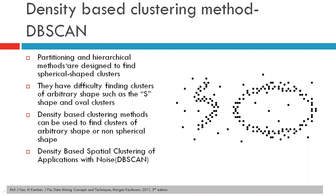Partitioning-based method and hierarchical methods are generally designed to find spherical shape clusters, but if the cluster has got some arbitrary shape — say for example, S-shape or oval shape — then density-based clustering method could be used to identify the cluster.